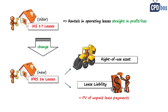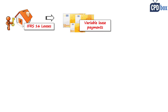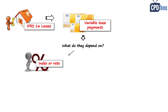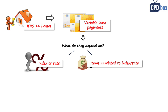Let's focus on the uncertainties related to future lease payments. IFRS 16 calls them variable lease payments, because their amount varies depending on something. Variable lease payments may depend on an index or rate — such as inflation rate, a benchmark interest rate like LIBOR, or consumer price index — or they may depend on future sales, use of the underlying asset, or other items unrelated to an index or rate.